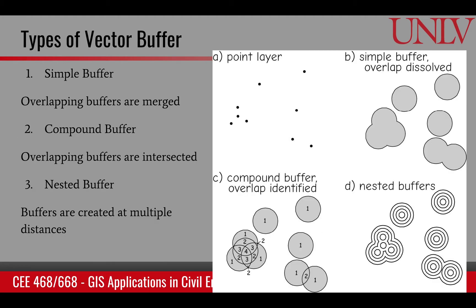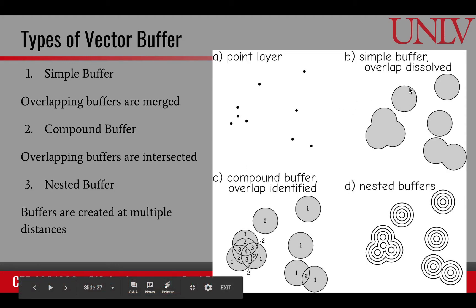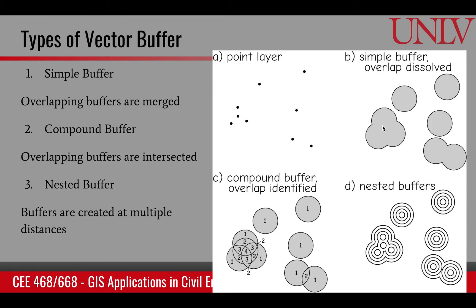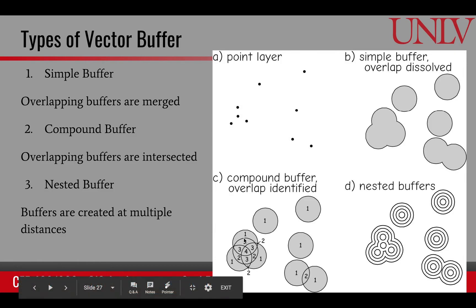There are mainly four types of buffers. A simple buffer is where you create all the buffers and, wherever they overlap, you remove the overlapping lines. In a compound buffer, you keep those overlapping lines and track wherever two buffers overlap as a separate region — two where two regions overlap, three where three regions overlap, and four where all regions overlap — keeping track of all these overlaps.